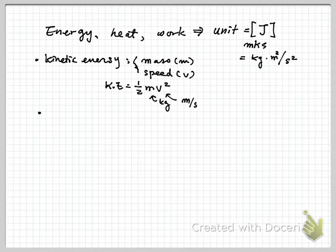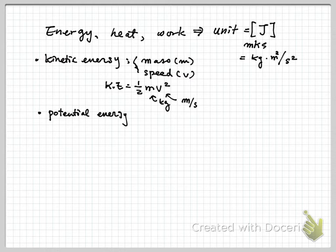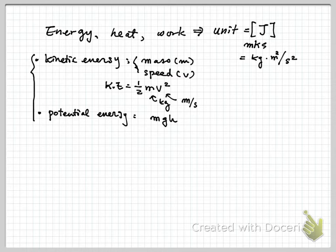There is another form called potential energy, or height energy, that you might have heard about. This is mechanical — it has something to do with potential energy due to position, specifically potential energy in a gravitational field, which is M times G times H as an example. There are various forms of energy, and as things move and change position you may deal with different forms of energy.